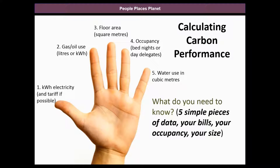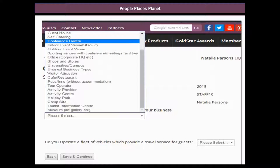Fourth, you need to know how economically active you are — to really achieve carbon savings you must grow your business while reducing your carbon. For a hotel that would be bed nights, for a conference centre delegates, for a sports centre supporters or customers. That measure helps us understand the figures I'll show you later. Finally, we want your water consumption in cubic metres. If you're not on a metered supply you don't need to input that figure, but we're looking to have a water benchmark to present later this year.